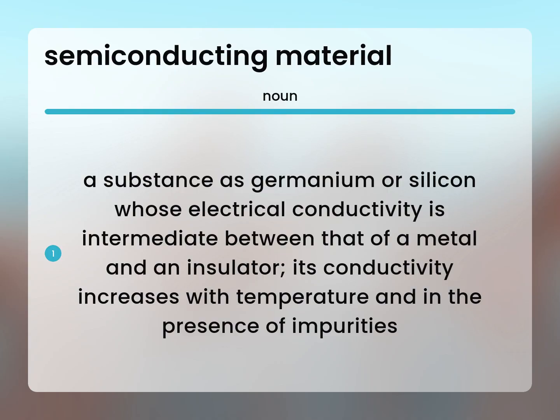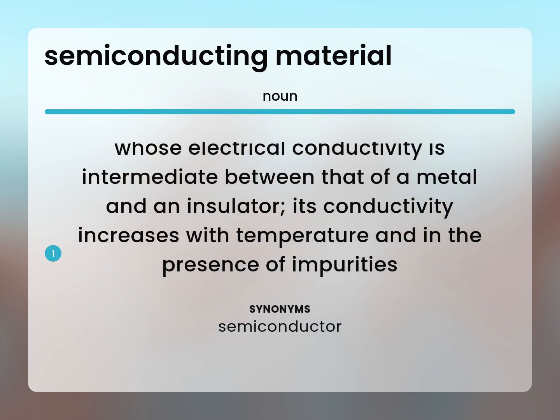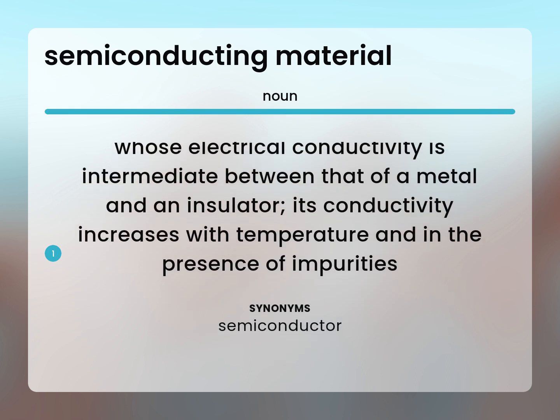Semiconductor. A substance such as germanium or silicon whose electrical conductivity is intermediate between that of a metal and an insulator. Its conductivity increases with temperature and in the presence of impurities.